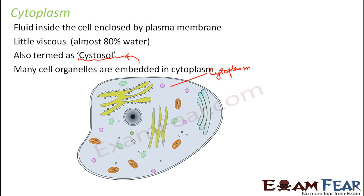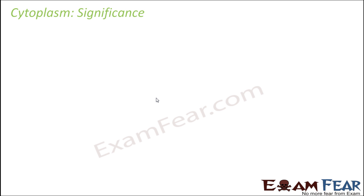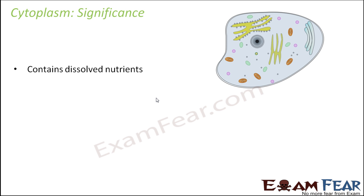Many cell organelles are embedded in the cytoplasm, as you can clearly see in the picture. When we talk about the composition of cytoplasm, it is made up of a fluid plus many biomolecules — for example, amino acids, proteins, carbohydrates, enzymes, vitamins, and nucleic acids are all present. One important function of cytoplasm is that it contains many dissolved nutrients necessary for the cell.